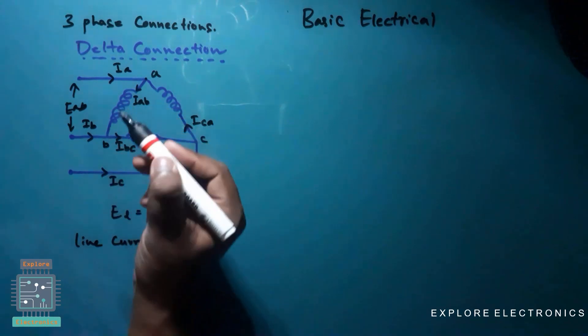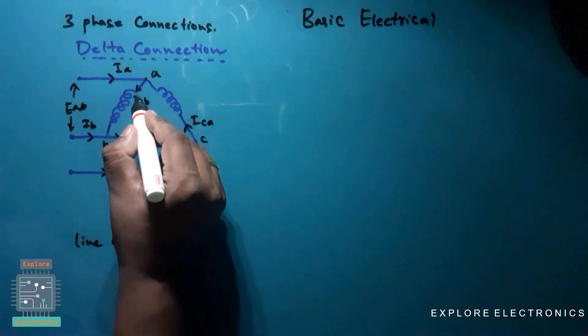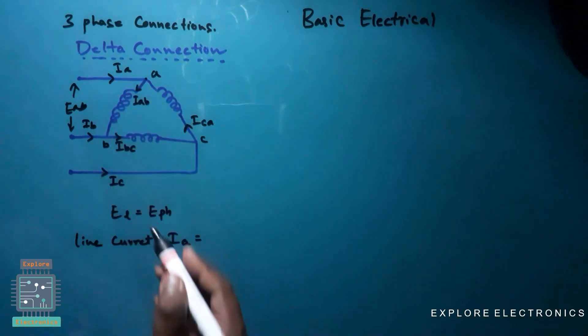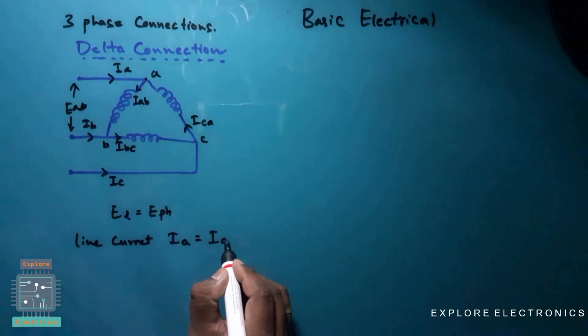One is Iab, another one is Ica which is coming in the opposite direction to this point and Iab is going outwards. So Ia is equal to Iab minus Ica I can write.